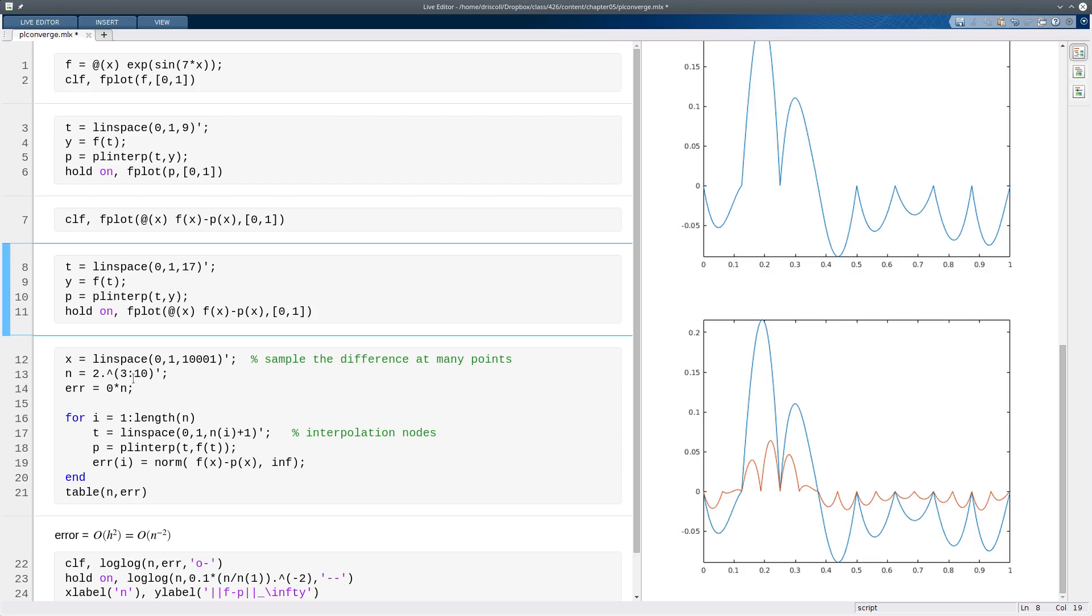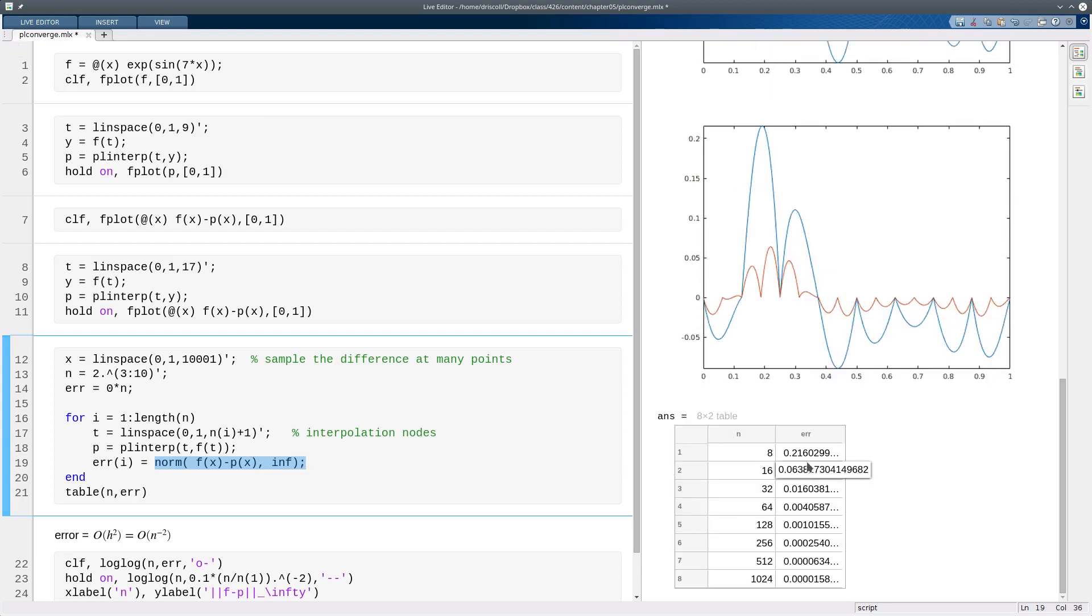To be a little bit more quantitative about that, I'll run an experiment here for many different values of n. I have to estimate the error. I can't compute it exactly. And I'll do that just by sampling the error at a whole lot of points in the interval and taking the max over that. So I construct the nodes, construct the interpolant of those nodes, and then I find the maximum absolute value of the error at my values of x.